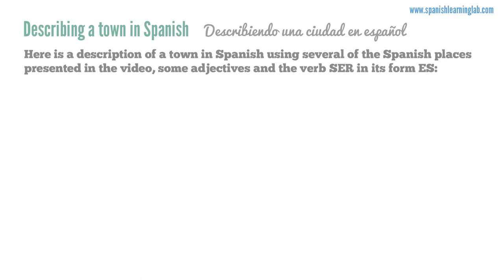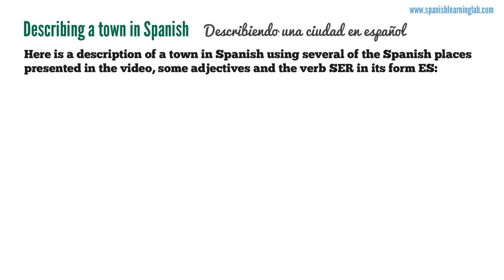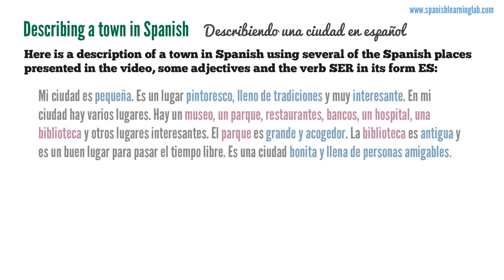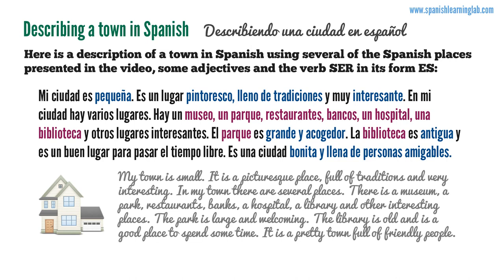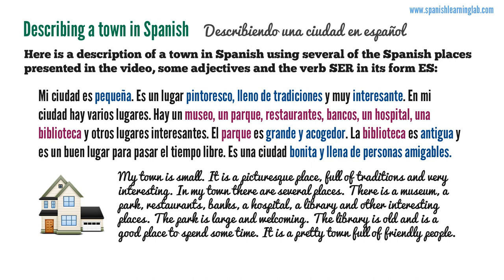Describing a town in Spanish. Here is a description of a town using several of the Spanish places presented in the video, some adjectives, and the verb 'ser' in its form 'es': 'Mi ciudad es pequeña. Es un lugar pintoresco, lleno de tradiciones y muy interesante. En mi ciudad hay varios lugares: hay un museo, un parque, restaurantes, bancos, un hospital, una biblioteca y otros lugares interesantes. El parque es grande y acogedor. La biblioteca es antigua y es un buen lugar para pasar el tiempo libre. Es una ciudad bonita y llena de personas amigables.'